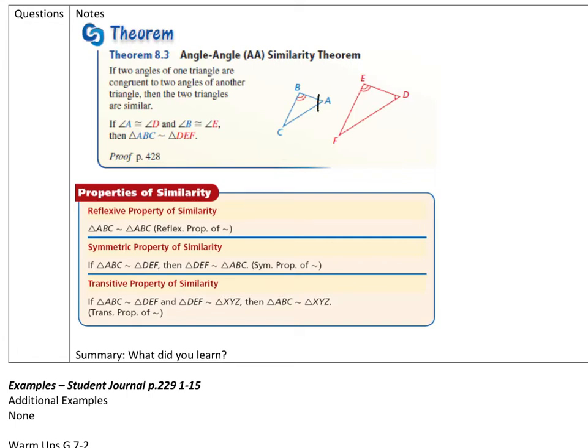That means if A over here and D are congruent, if B and E are congruent, that's all you need, is two angles to be congruent to each other. Now automatically, these triangles will be similar, so the parts will be in proportion as far as the side lengths. The angles will be congruent, but the side lengths will be in a proportion.